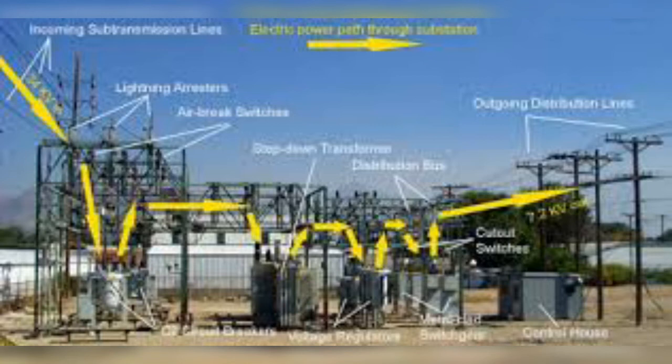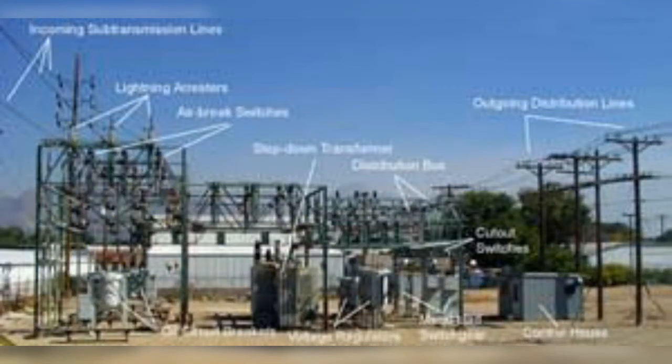A radial feeder connects between the source and a load point. It may supply one or more additional load points between them. If the connection to any intermediate load point is in and out, or loop-connected instead of a tap, the feeder does not assume a load character where each load point can be supplied from one direction or the other.